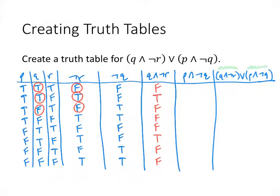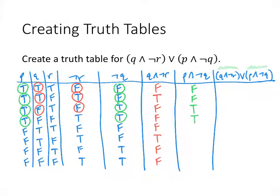For P ∧ ¬Q, we look at the P and NOT Q columns. T∧F=F, T∧F=F, T∧T=T, T∧T=T, and then F's the rest of the way down, giving F F T T F F F F.